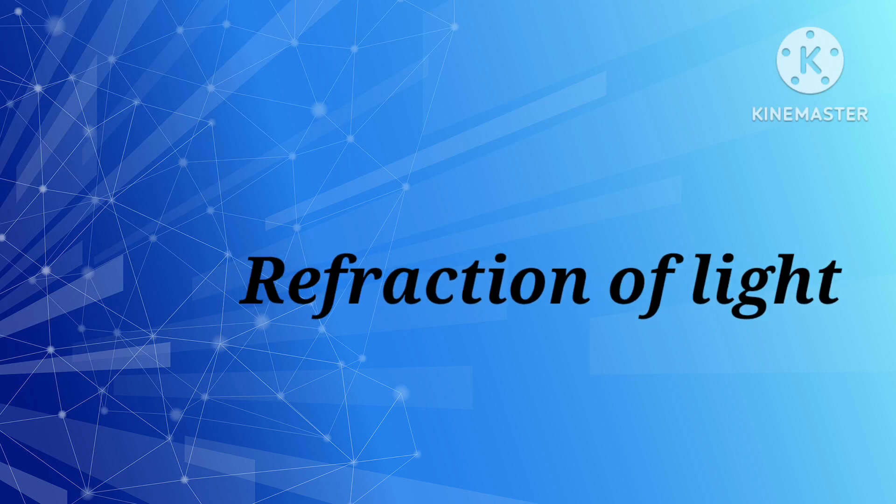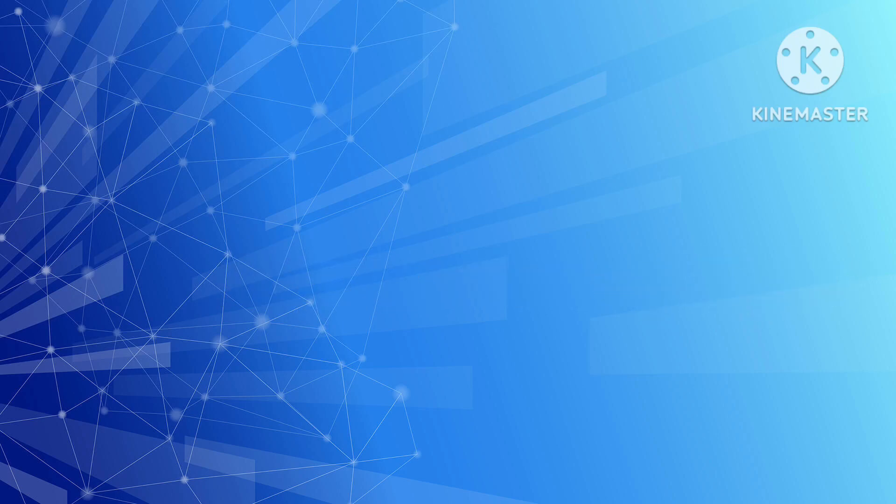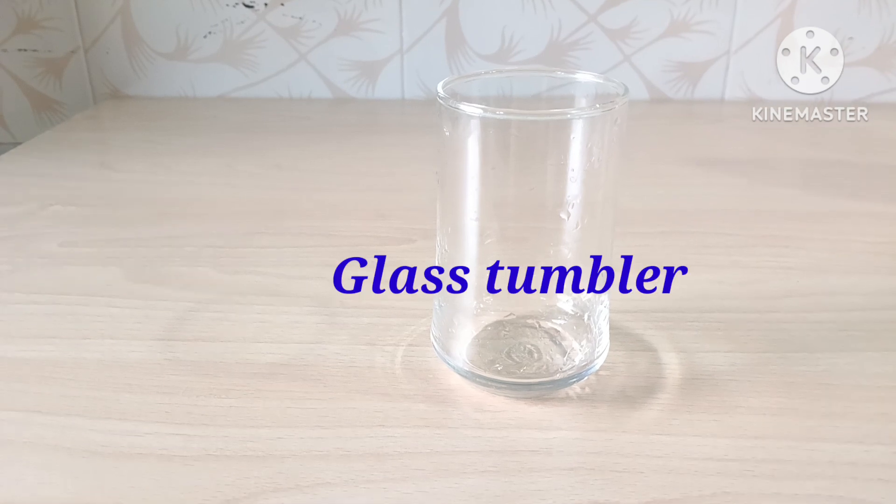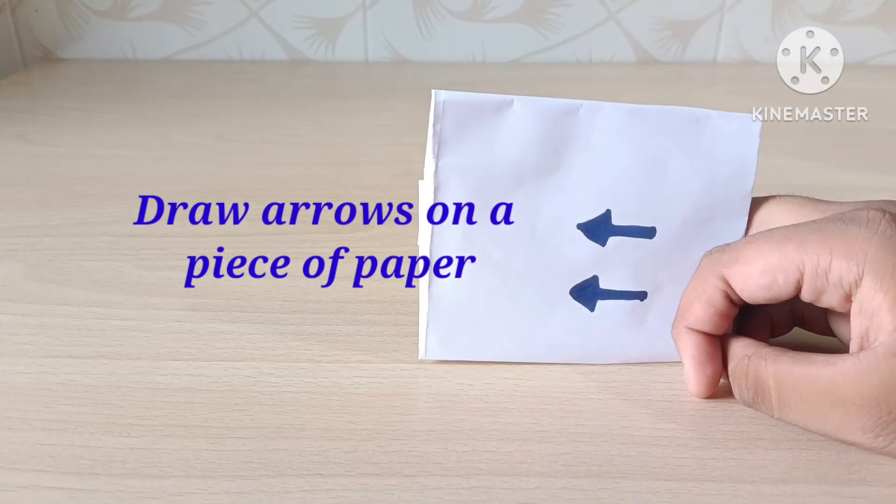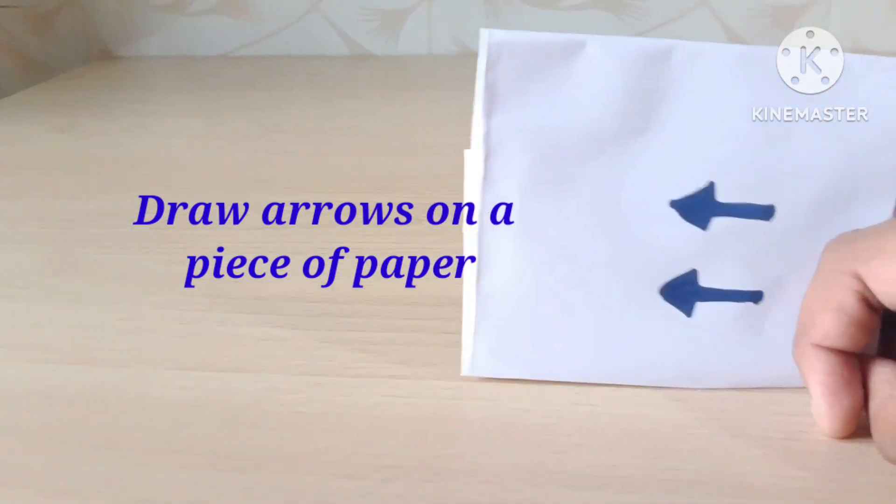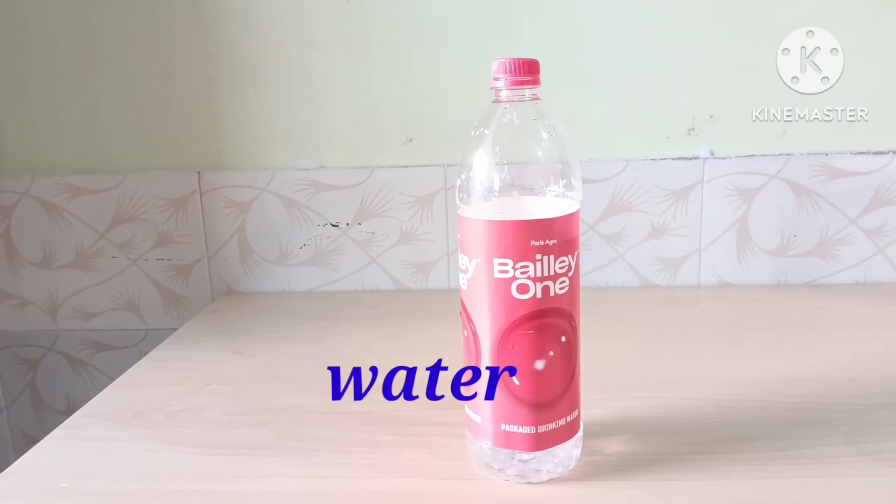Today I am going to show you another activity of refraction of light. To do this activity we need a glass tumbler, a piece of paper with arrow marks drawn on it, and water.